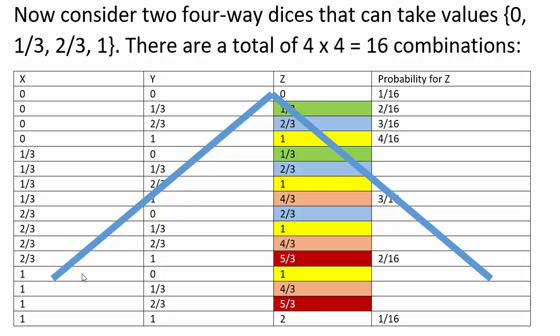So what you'll end up with is this triangular function where you'll get one the maximum number of times, and the extremes 0 and 2 the minimum number of times. And the other values you'll get somewhere in between what you'll get for 1 and what you'll get for 0 or 2, and the slope of this line will be linear.